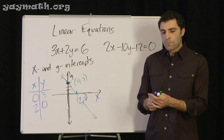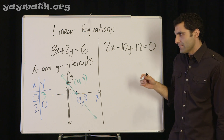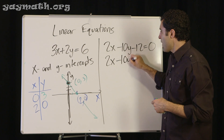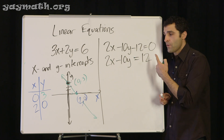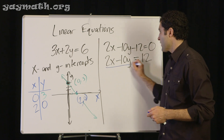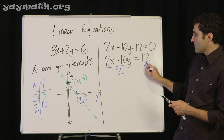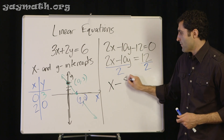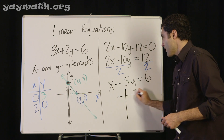Let's put this next equation in standard form. We need to leave the x's on the left and move the 12 over. So we get 2x minus 10y equals 12. Now we need to simplify — there's a common factor of 2 in 2, 10, and 12, so divide both sides by 2. That gives us x minus 5y equals 6. Now it's in standard form.